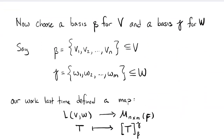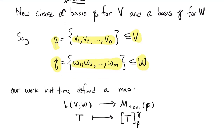Moving on — let's pick some ordered bases. Beta is a basis for V with elements V1 to VN, so the dimension of V is N. Gamma is a basis for W with elements W1 to WM, so the dimension of W is M. As shown last time, if you take a linear transformation from V to W, once you choose these ordered bases it naturally gives rise to an M by N matrix over the field F, determined by the linear transformation T.